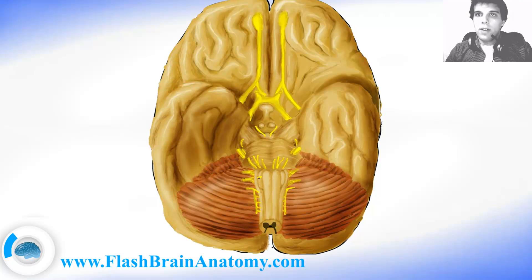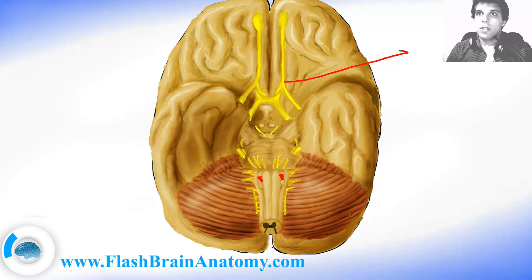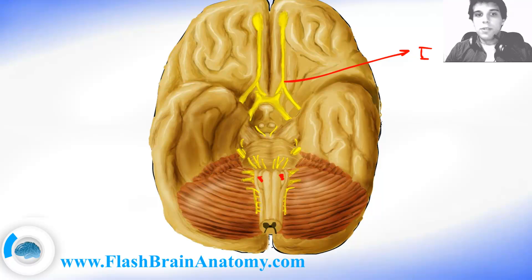Here we only have the hypoglossal nerve between the olivary bodies and the pyramids. The first cranial nerve is the olfactory nerve, and it is important for the sense of smell.